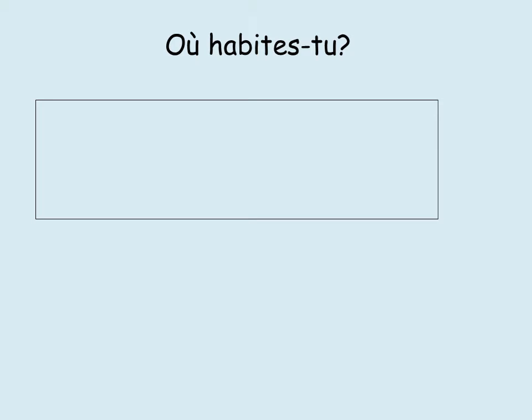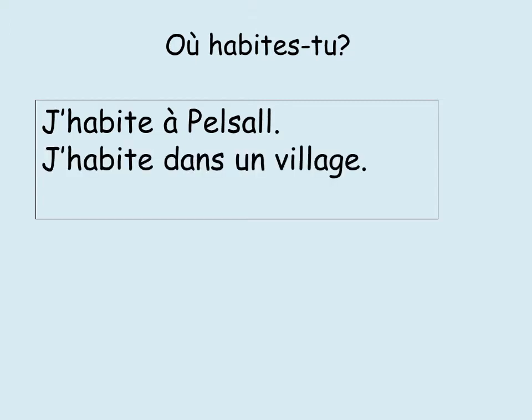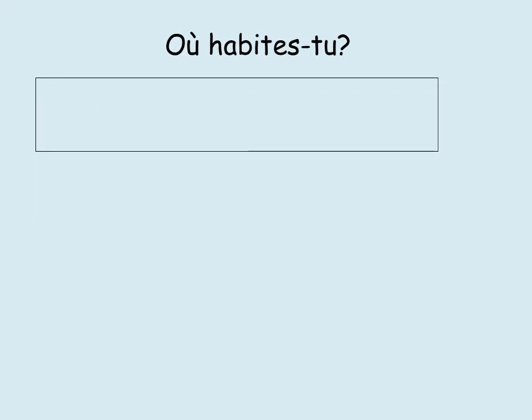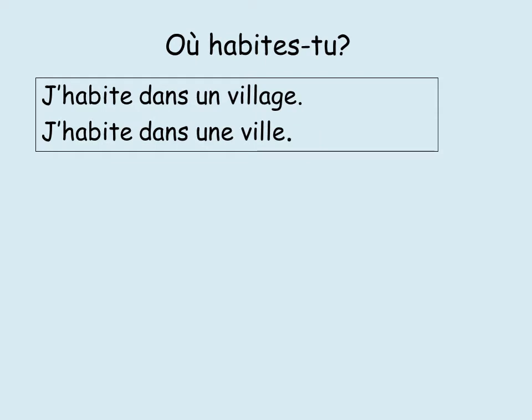Hopefully you will have written something that looks a bit like this: J'habite à Pelsaux, or it might be a different place — J'habite dans un village, or maybe J'habite dans une ville. So: I live in Pelsaux, I live in a village, or I live in a town. That would be a nice simple answer. Let's have a look at the two answers: J'habite dans un village, et J'habite dans une ville.